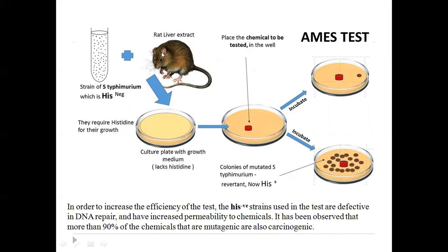In this common example, rat liver extract is the source of Salmonella — specifically the histidine-negative Salmonella strain. Under normal conditions, when cultured on LB media lacking histidine supplement, there is no growth. To test a chemical, you place it on the culture plate with growth medium that lacks histidine, and you observe whether colonies form.